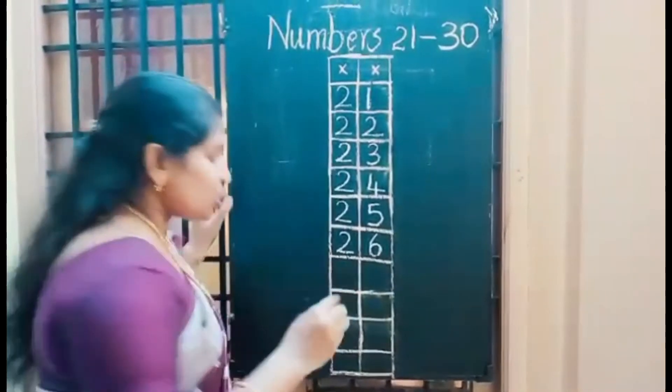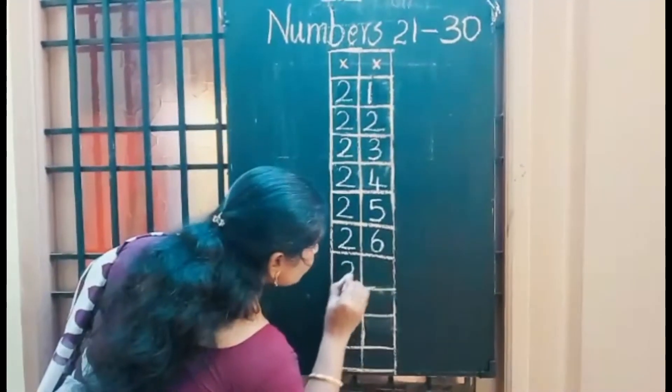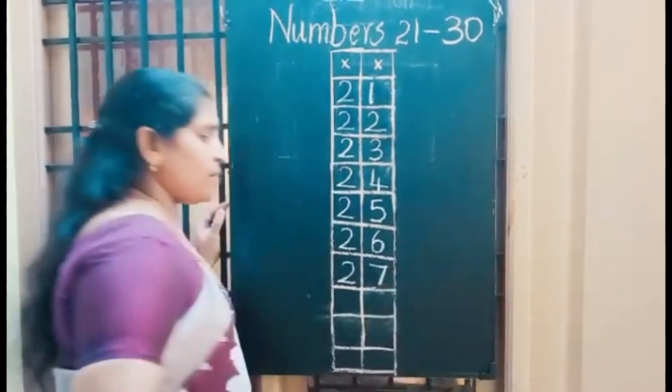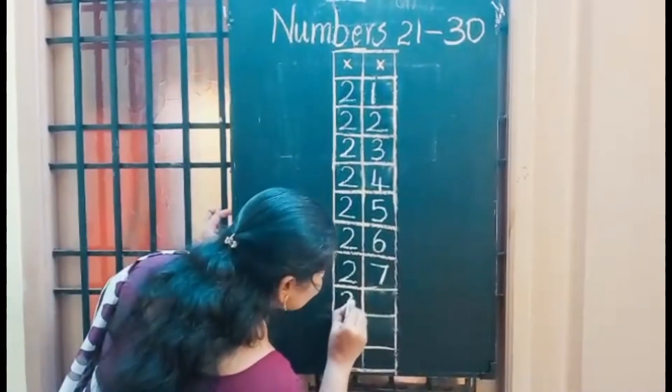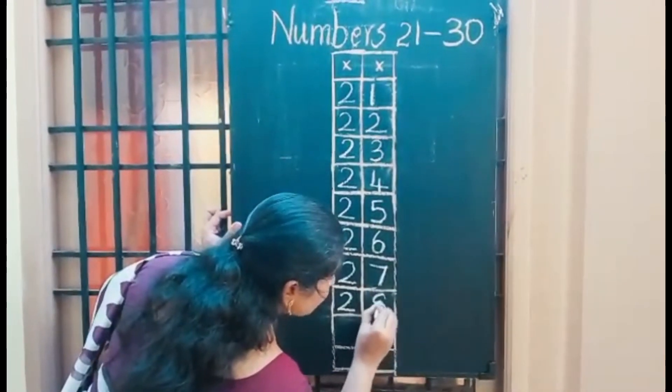2 7, 27. 2 in the 10th place, 7 in the 1's place. 2 8, 28. 2 in the 10th place, 8 in the 1's place.